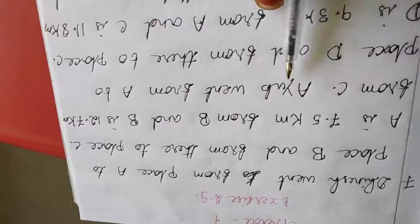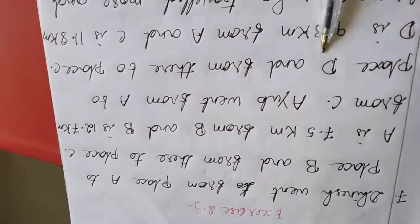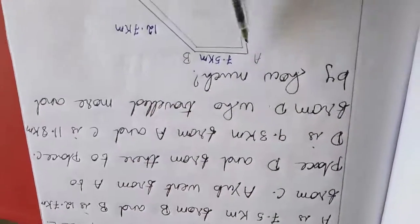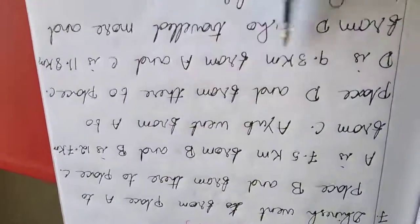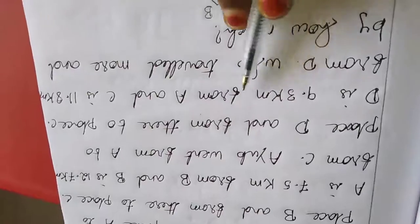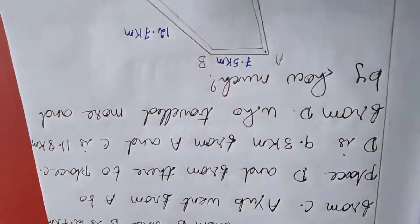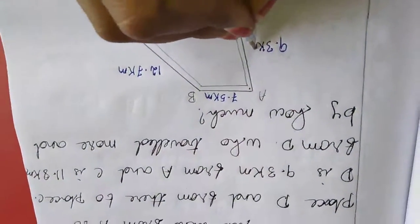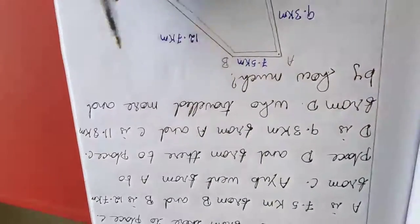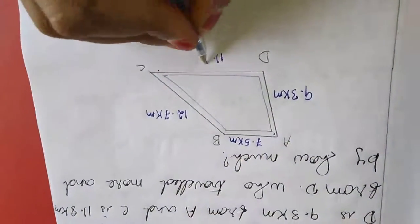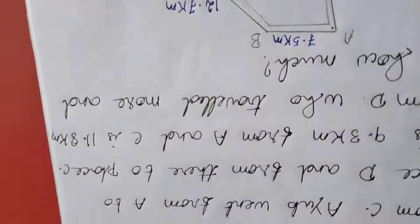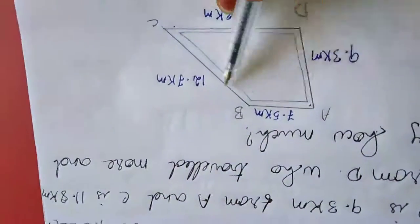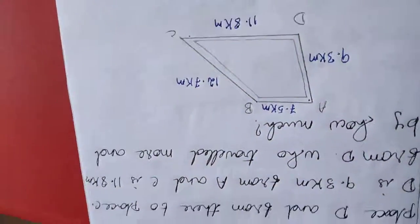Next one is Ayu went from A to place D and from there to place C. Ayu is moving A to D, D to C. D is 9.3 km from A, so this one distance is 9.3. Then C is 11.8 km from D. This one is 11.8 km. Then, who traveled more and by how much? They are moving two ways, so who is traveling more kilometers?